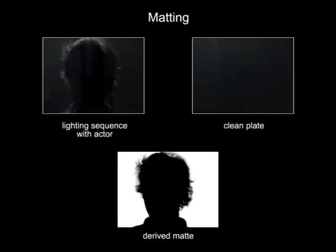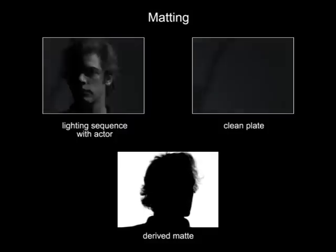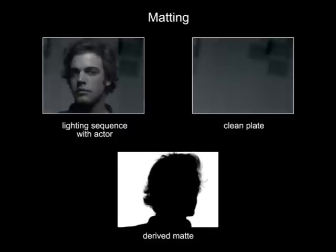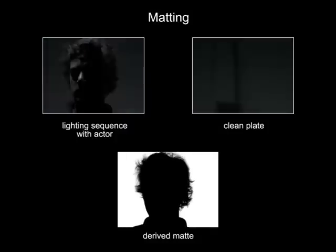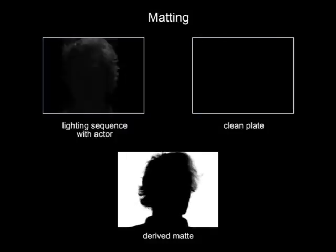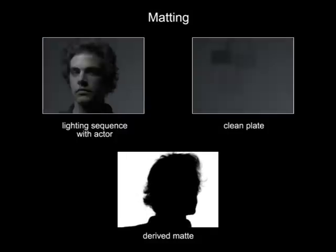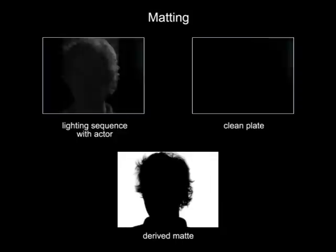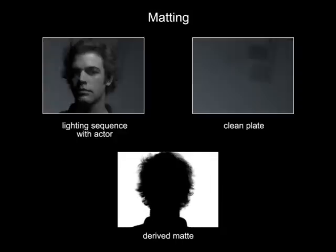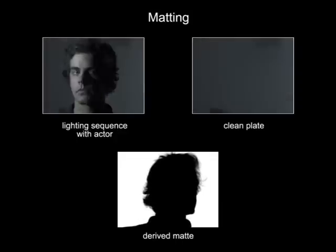We composite the actor into a background using the matte images that follow each tracking frame. We compare the actor's image sequence to a clean plate sequence, letting us derive accurate alpha values and remove stray light from the background.